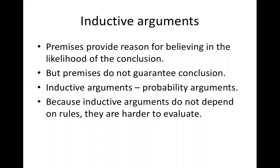Last week we had seen an example of an inductive argument: 95% of men are honest, Peter is a man, therefore Peter is honest. Most of you said the argument is not very reliable, because when you say 95% of men are honest and Peter is a man, you are not very sure — Peter could be among the 5% of men that are dishonest. That's the nature of an inductive argument.